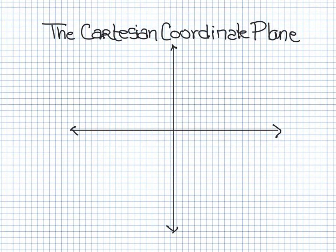One of the things you need to be familiar with, not just for the GED but also in pre-algebra and algebra classes, is what's known as the Cartesian coordinate plane. This isn't the only name we call it — your teacher might call it the XY plane or just the coordinate plane. Either way, what you're going to see here is two perpendicular number lines.